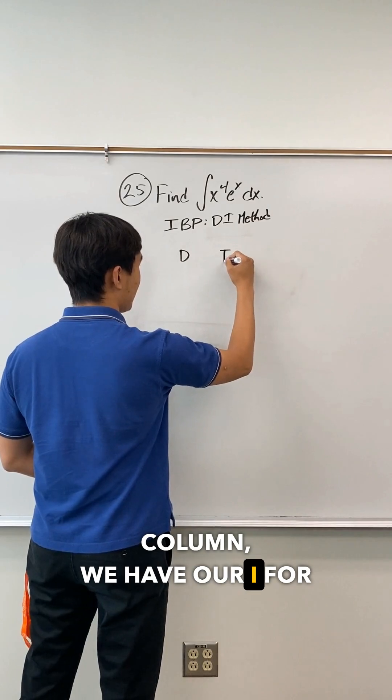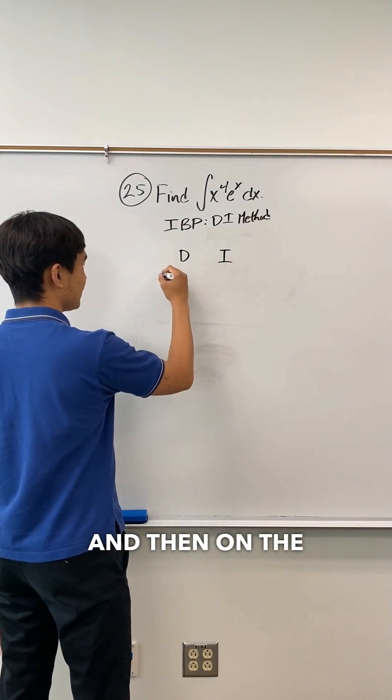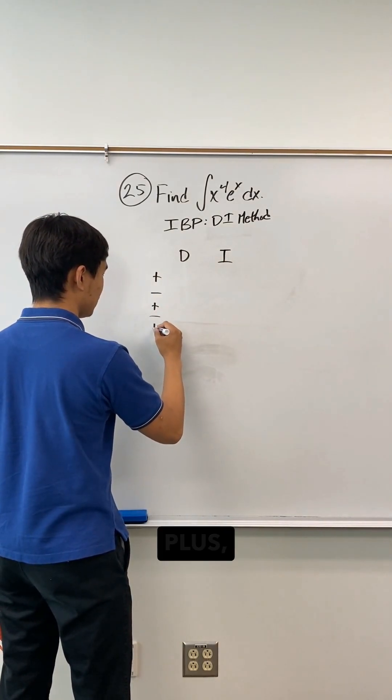How we set it up is we have our D for differentiation column, we have our I for our integration column, and then on the side here we do plus, minus, plus, minus, plus, minus.